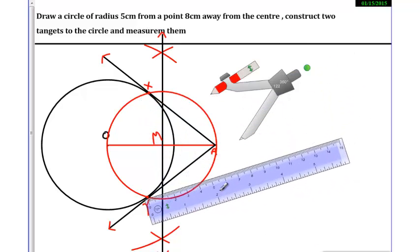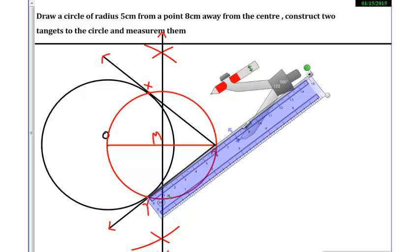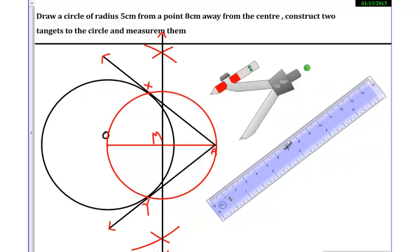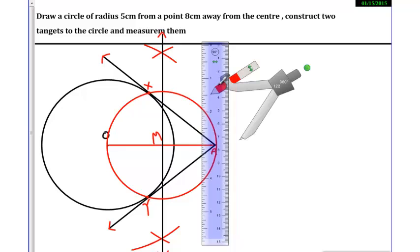These tangents drawn from point A to the circle are the same. See this again: 6.4, 6.5. When we draw tangents from an exterior point of a circle, they are congruent as per the theorem, so we need to check it out. It's approximately 6.5cm in both tangents.